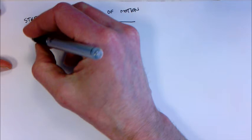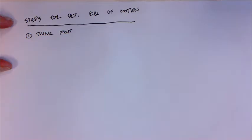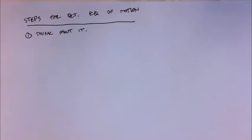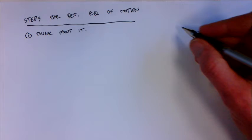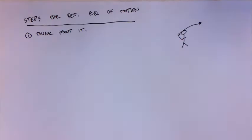At a high level, here's what the steps are. The first thing you want to do is simply think about it — if you are dealing with some kind of system and you'd like to understand how that system is going to behave, it's important before you start doing any mathematics to close your eyes and play the movie in your head and ask yourself what that system is going to do. Let's imagine we're throwing a ping-pong ball: you've got a person with a ping-pong ball in their hand, throwing it. What's going to happen?